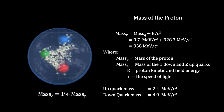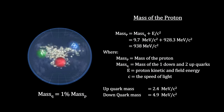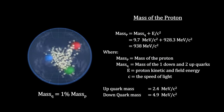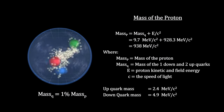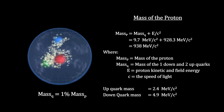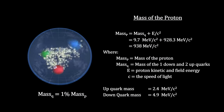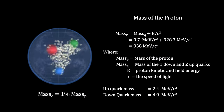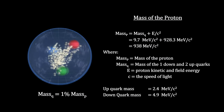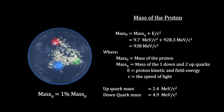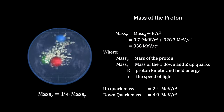99% comes from the energy of the fields and motion of the moving parts, following the famous E equals mc squared formula. So it is quite accurate to say that confined energy is the origin of mass. We'll bring this point home when we get to the Higgs boson.